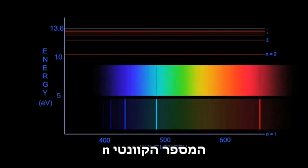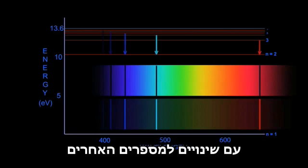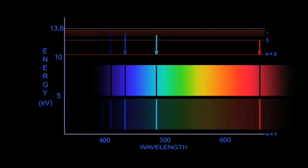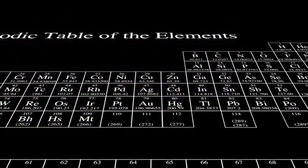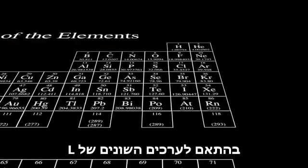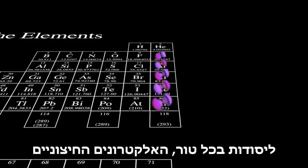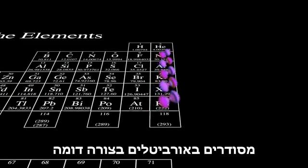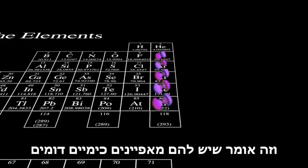The quantum number N determines the gross energy of the electron in each orbital, with some adjustments for the other numbers. And the quantum number L determines the shape of the orbital. All of the elements in the table are arranged into groups based on different values of L. Elements in a given column have their outer electrons in similarly shaped orbitals, and this means they have similar chemical properties.